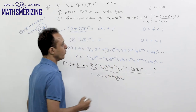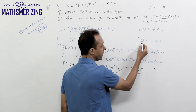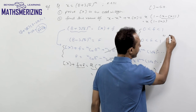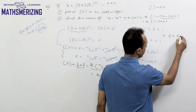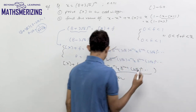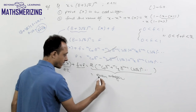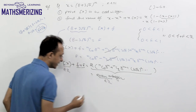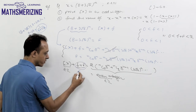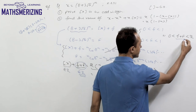Since f lies between 0 and 1 and capital F also lies between 0 and 1, their sum f + F lies between 0 and 2. The greatest integer function [x] is an integer and the right-hand side is also an integer, so f + F must also be an integer. The only integral value possible in this range is 1.